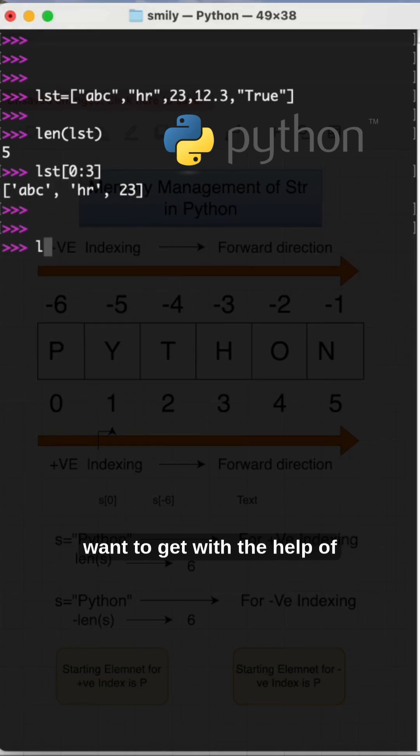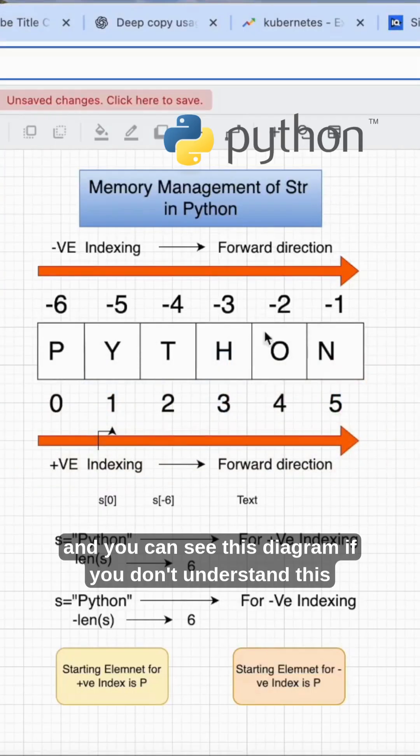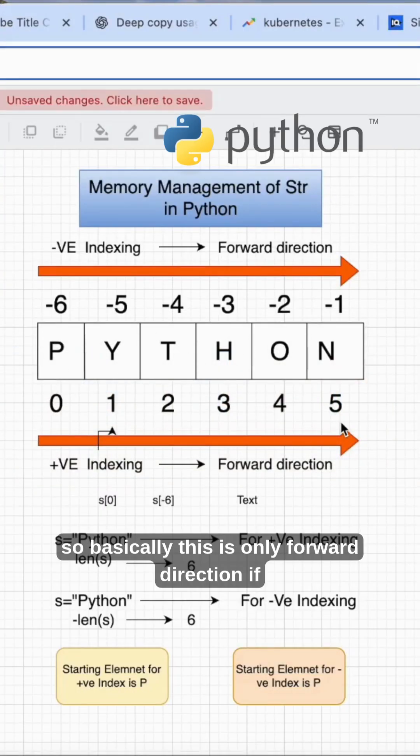Suppose I want to get with the help of minus. Minus will start from 0 1 2 3 4 5 right, I mean 0 till 5. Minus 5 is ABC, minus 4 is HR, minus 3 is 23, likewise you can count it and you can see this diagram if you don't understand this. So based on this is only forward direction. If you provide the backward direction you will get the space as an answer.